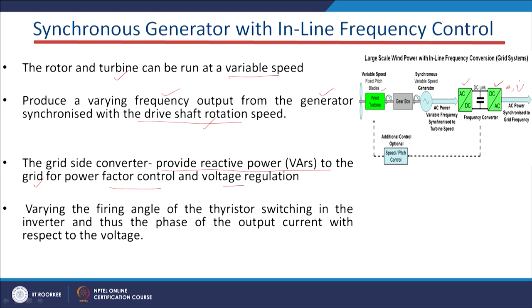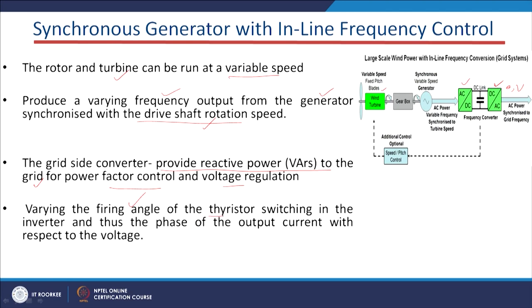In power electronic devices we have thyristors or IGBTs. By controlling the firing angle of these devices we can control the voltage and power factor. By varying the firing angle of the thyristor switching in the inverter, the phase of the output current with respect to the voltage can also be controlled — that is, we can control the phase angle between current and voltage of the grid side at the PCC.